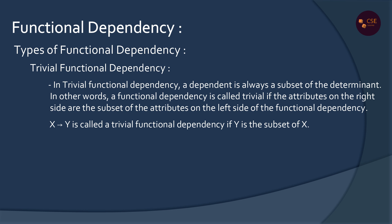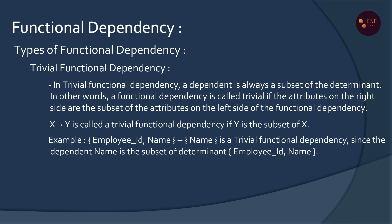For example, X determines Y where Y is a subset of X — that is Trivial Functional Dependency. Employee ID and Name determines Name — this is a Trivial Dependency because the right side attribute Name is already present on the left side. If the right side is a subset of the left side, it is Trivial Functional Dependency.